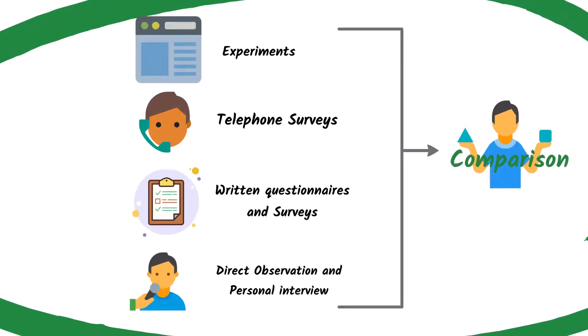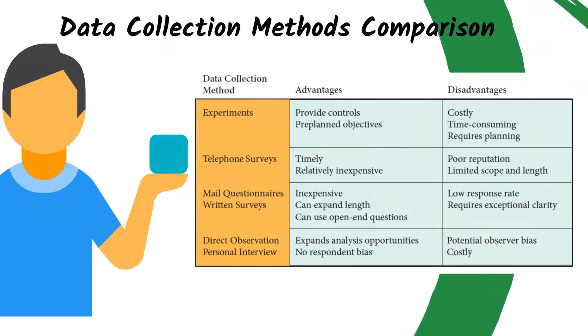Finally, let's recap and compare all four methods. Experiments can provide controls with pre-planned objectives, but are costly, time-consuming, and require planning from the researcher. Telephone surveys can provide more timely information and are relatively inexpensive. But as we know, they have a poor reputation and a stigma. They can also have a limited scope of what information can be gathered. Mailer questionnaires or written surveys are cost effective, they can expand in length, and we can use open-ended questions. But people don't typically respond, and the respondent cannot get clarification on a question that they might have. And then finally, direct observation and personal interviews expands the analysis opportunities, and there's no respondent bias. However, there is potential observer bias, and they can be costly.